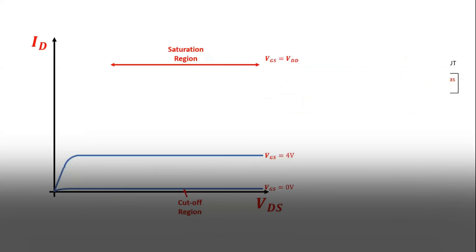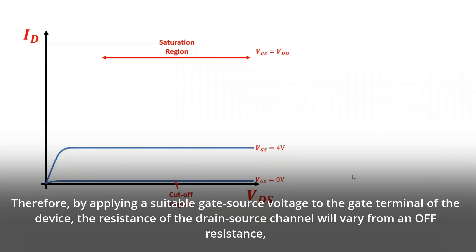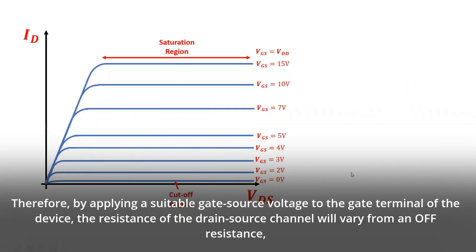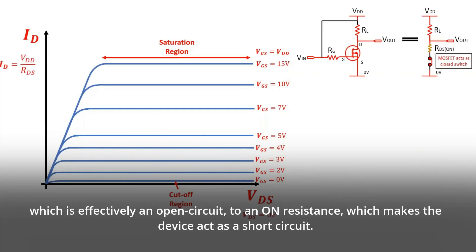Furthermore, the saturation region occurs when the gate source voltage exceeds the threshold voltage, which allows maximum drain current to flow through the device. Therefore, by applying a suitable gate source voltage to the gate terminal of the device, the resistance of the drain source channel will vary from an off resistance, which is effectively an open circuit, to an on resistance, which makes the device act as a short circuit.